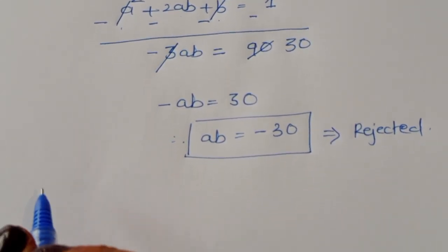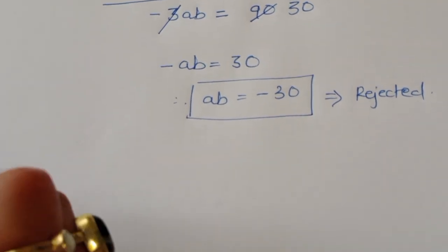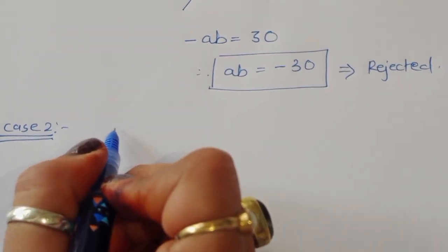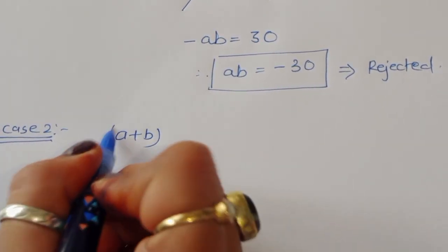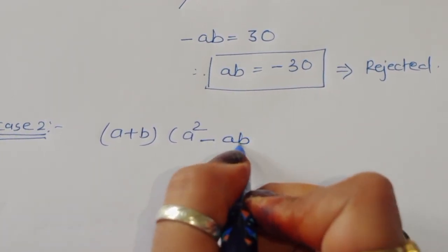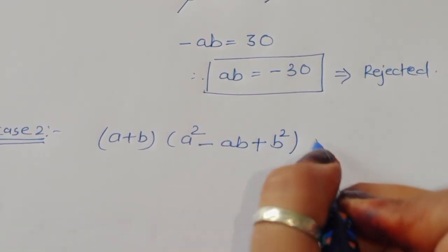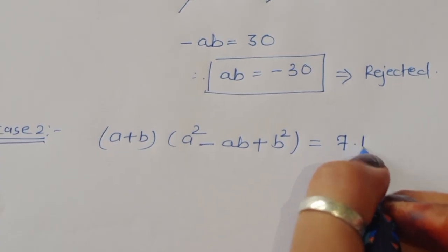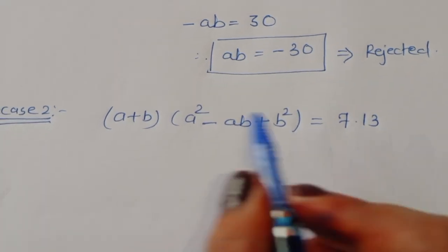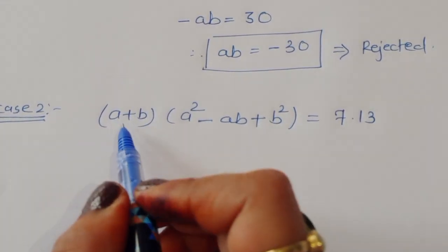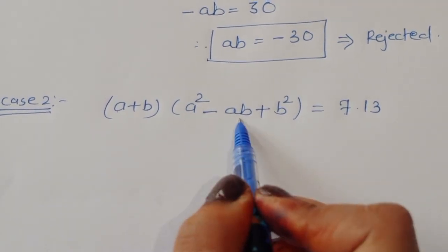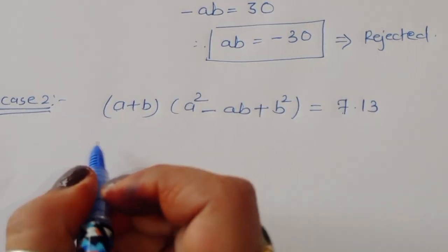Now taking the second case: (a + b)(a² − ab + b²) = 7 × 13, which equals 91.